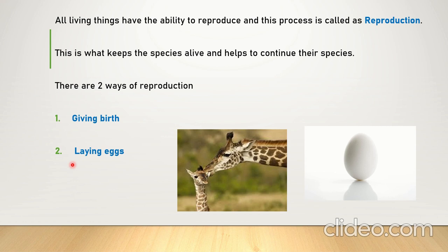There are two ways to reproduce. One is giving birth, where another body comes from your body. The other is laying eggs — an egg is a structure from which another living organism comes out. Animals like giraffes, humans, and elephants give birth, whereas some birds, insects, and reptiles lay eggs, and their offspring come from those eggs.